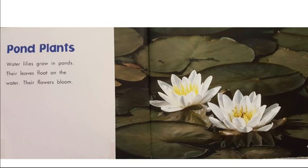Pond plants — water lilies grow in ponds. Their leaves float on the water and their flowers bloom. Remember, a plant has basic needs just like an animal, but their basic needs can be a little bit different. They get nutrients from soil. They need air, water, and sunlight. Which of the basic needs is the water lily getting when it spreads its leaves on top of the pond? The leaves are getting sunlight and air when they sit on top of the pond, as you see in the picture here.